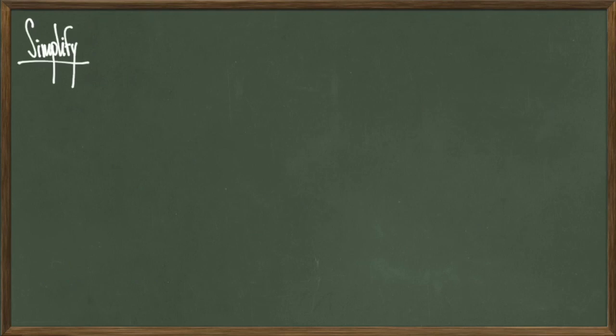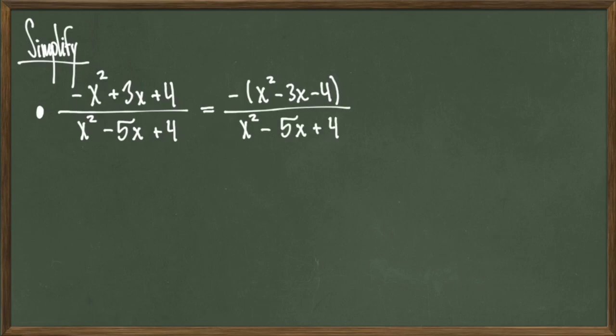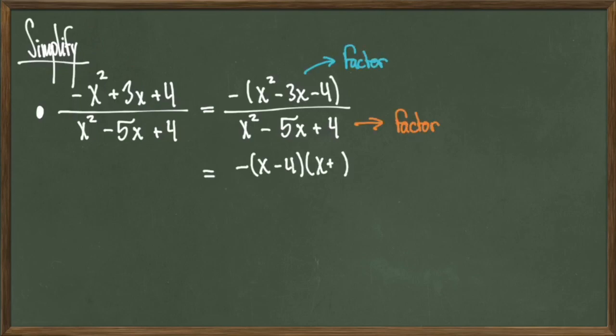For our last example, we'll simplify the quantity negative x squared plus 3x plus 4 over x squared minus 5x plus 4. The first step I'll take is to factor out a negative 1 from the numerator to get a revised expression negative quantity x squared minus 3x minus 4 over x squared minus 5x plus 4. The next step is to factor both the numerator and the denominator. If I factor both, I get the revised equation negative quantity x minus 4 times x plus 1 over x minus 4 times x minus 1.